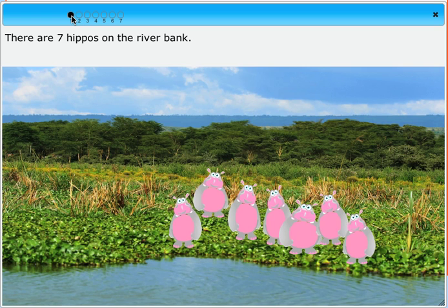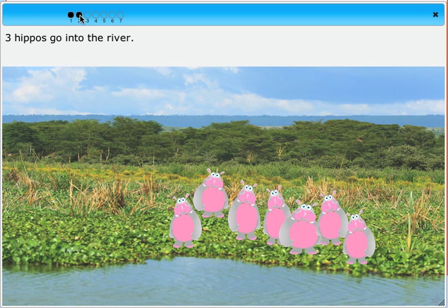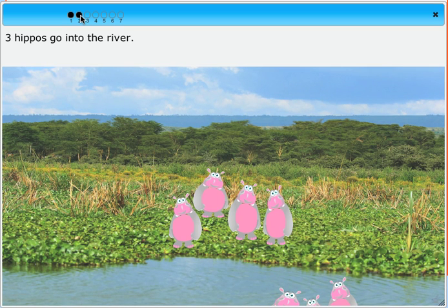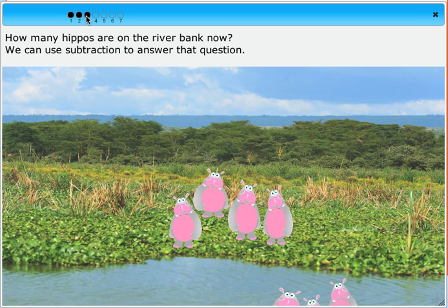There are seven hippos on the riverbank. Three hippos go into the river. How many hippos are on the riverbank now? We can use subtraction to answer that question.